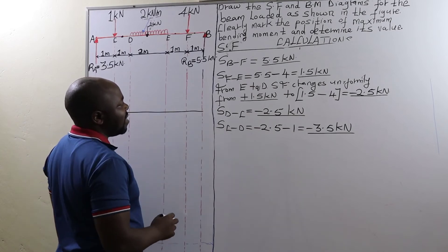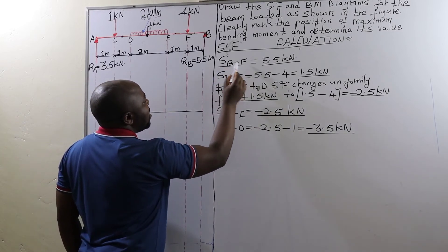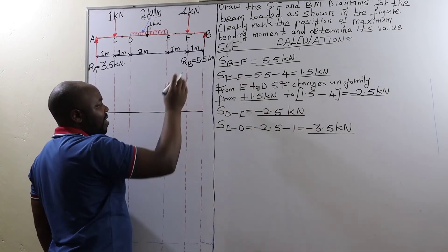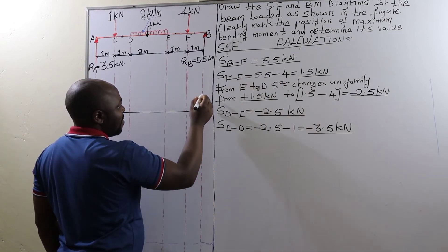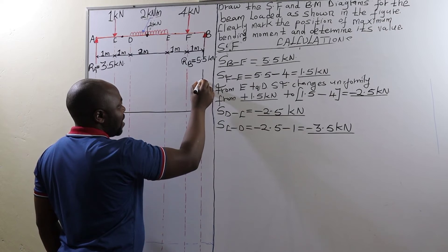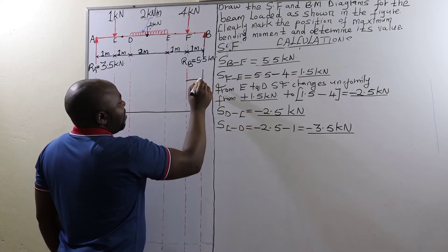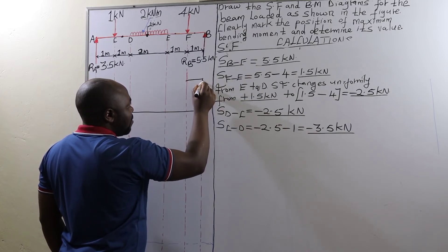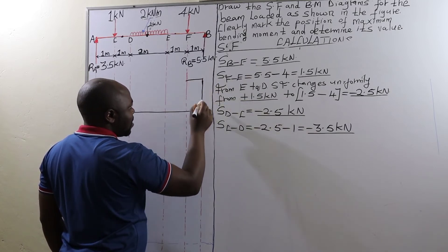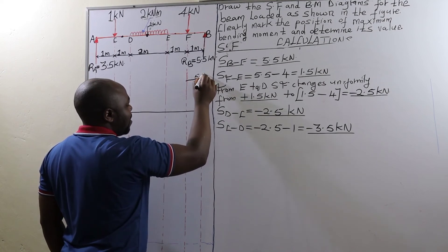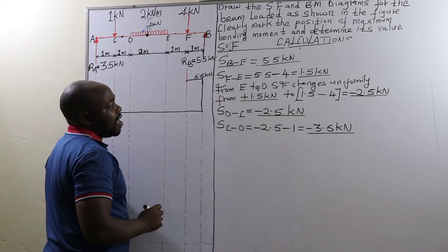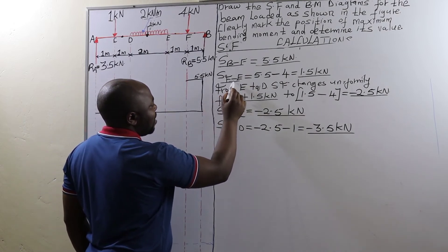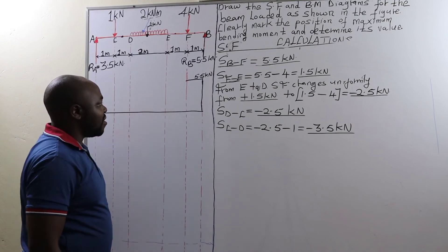Beginning on the right-hand side, we have the shear force between B and F, which is 5.5 kilonewtons — we are going to draw it above this line. If we approximate 5.5 to be at that point between B and F, we are going to have a shear force diagram that looks like that, so here we have 5.5 kilonewtons. Then from there we have the shear force between F and E, which is 1.5 kilonewtons.